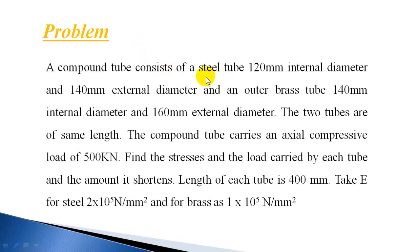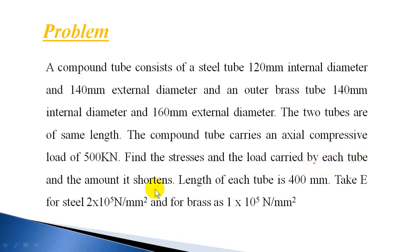A compound tube consists of a steel tube, 120 mm internal diameter and 140 mm external diameter, and an outer brass tube, 140 mm internal diameter and 160 mm external diameter. The two tubes are of the same length. The compound tube carries an axial compressive load of 500 kN. Find the stresses and the load carried by each tube and the amount it shortens. Length of each tube is 400 mm. Take E for steel as 2 x 10^5 N/mm² and for brass as 1 x 10^5 N/mm².